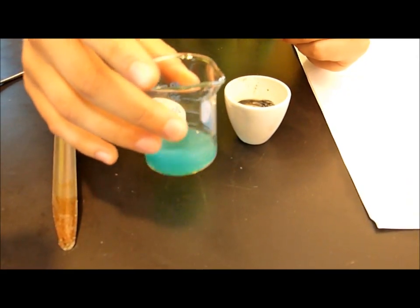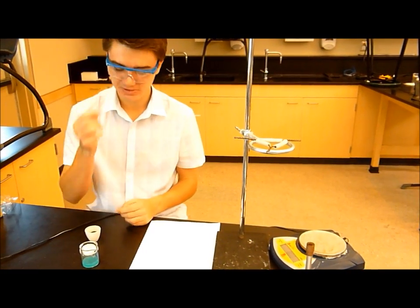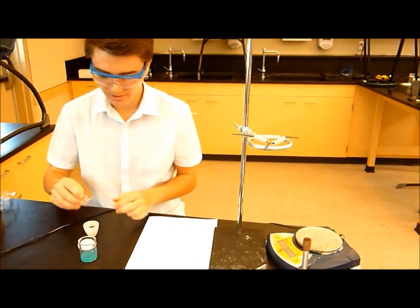Now you need to measure out about 20 centimeters of aluminum wire, and coil it so that it will fit in the beaker.